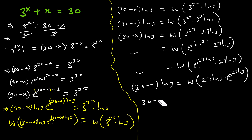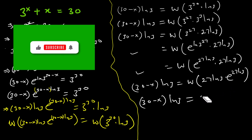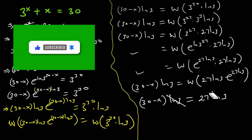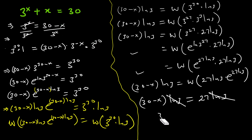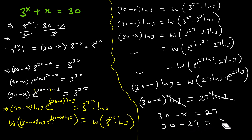So we get 30 minus x times ln of 3 equals 27 times ln of 3. Dividing both sides by ln of 3, we have 30 minus x equals 27, so x equals 30 minus 27, which gives us x equals 3.